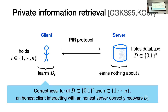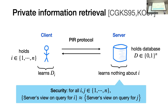More formally, our PIR scheme is going to be correct if for any database held by the server and for any index held by the client, an honest client interacting with an honest server is going to correctly read the database bits that it's trying to learn. In addition, our PIR scheme is going to be secure if the server learns nothing about the index that the client is reading. So for any two indices I and J that our client could be reading, our server's view is going to be indistinguishable whether the client is making a query for I or making a query for J.